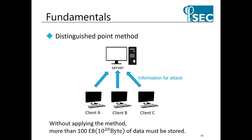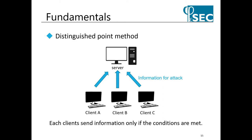Pollard rho method generally performs parallel attacks. Rational points generated as attack information from many clients are sent to the server and saved. If no measures are taken, the amount of data to be saved will be 100 exabytes or more in the case of 140-bit ECDLP, and cannot be saved. Therefore, the amount of data saved by the server is reduced by sending only when the conditions are met among the rational points generated by the client. This method is called the distinguished point method.